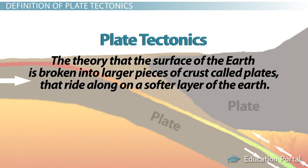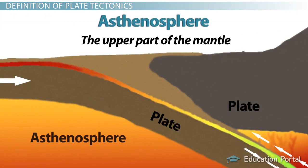Plate tectonics is the theory that the surface of the earth is broken into larger pieces of crust, called plates, that ride along on a softer layer of the earth, known as the asthenosphere, which is the upper part of the mantle.